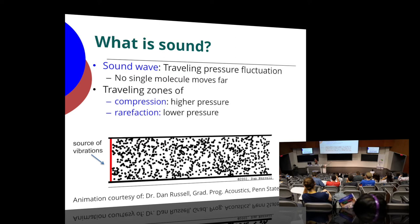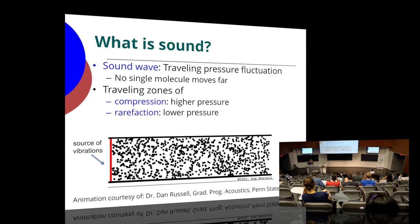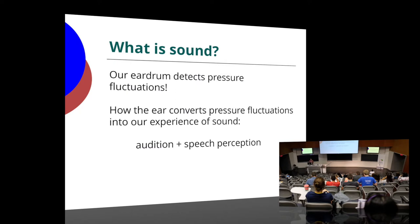What actually happens is that each individual air molecule around you doesn't really move that much. What happens when I'm talking is that my vocal tract causes different air pressures to come out — things that are higher pressure and things that are lower pressure. It's more like this animation: none of the molecules really move much, but you can see the waves traveling through them — areas of higher and lower pressure. We're sensitive to these pressure fluctuations, and we're really good at telling these very fast waves apart from one another.